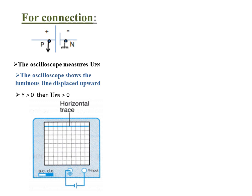In this case, Y is greater than zero — the luminous line is displaced upward above the x-axis — therefore U_pn is greater than zero.